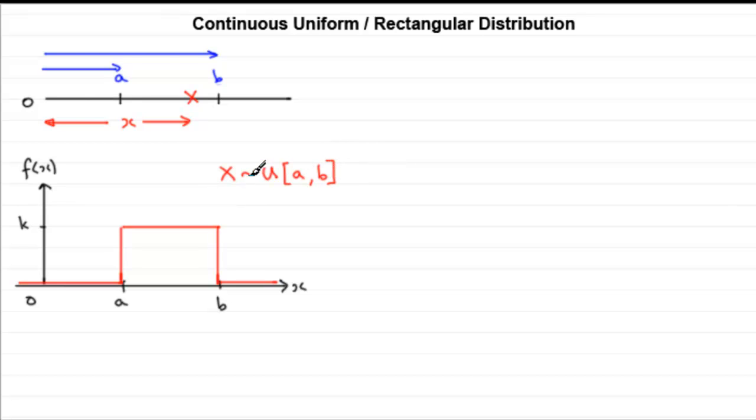You'll also find that this can be written not just with a U, but it could be written as x is distributed as a rectangular distribution between the limits A and B, or with parameters A and B. And you could also find that we don't use square brackets, but they could be curved brackets here.